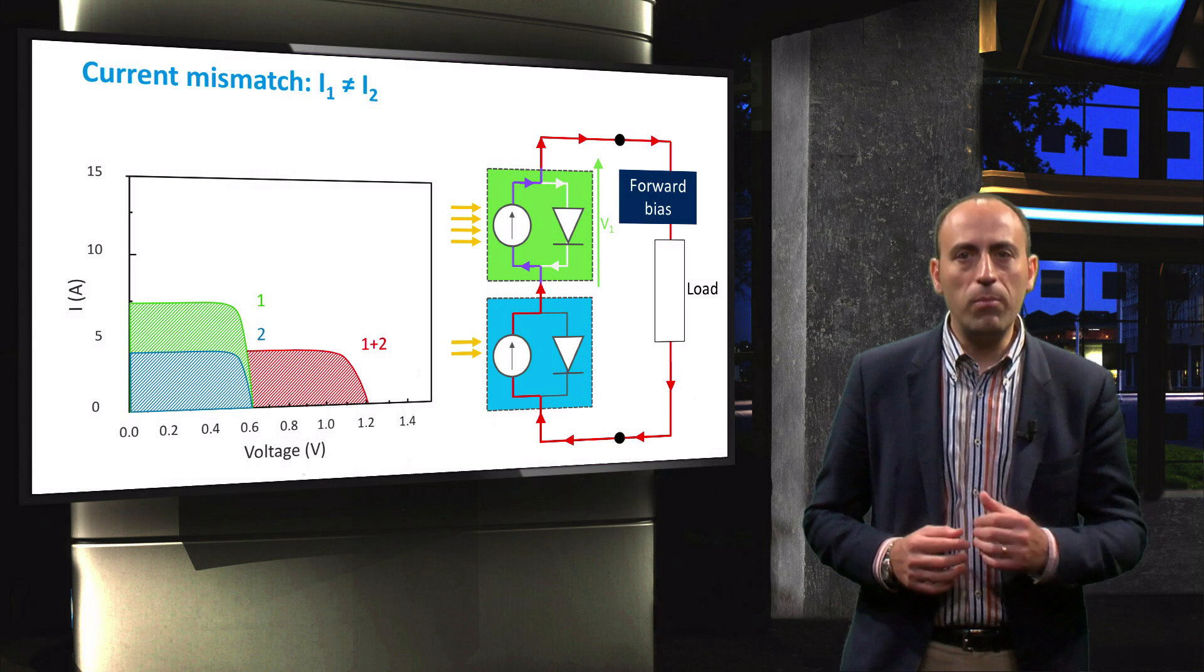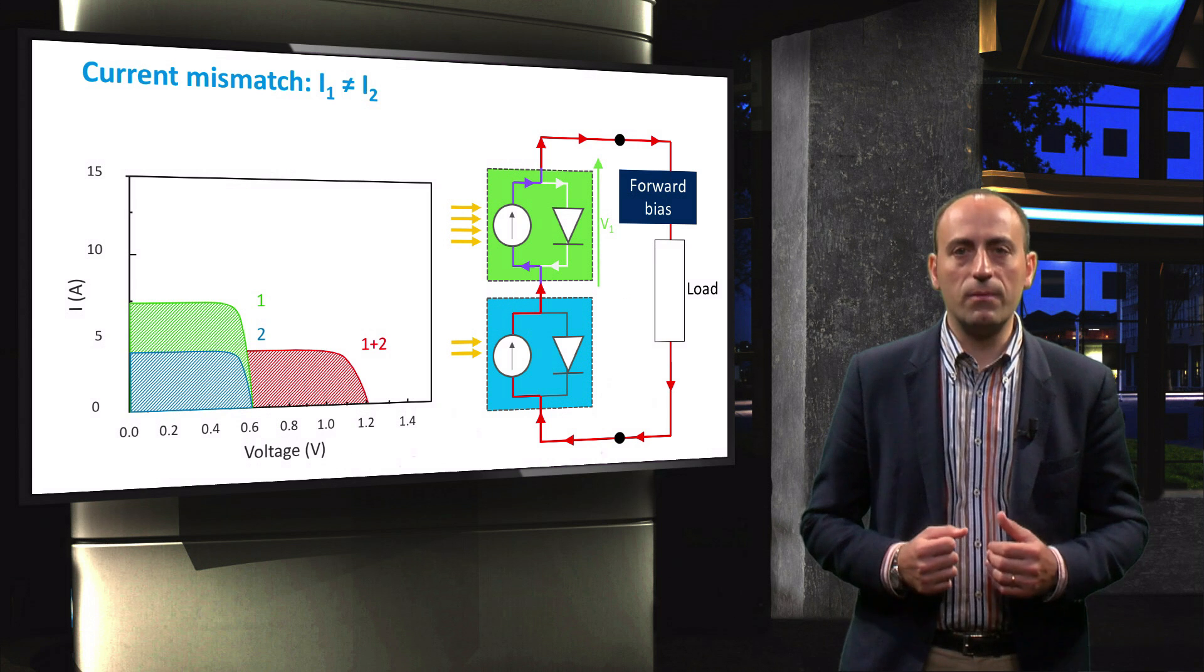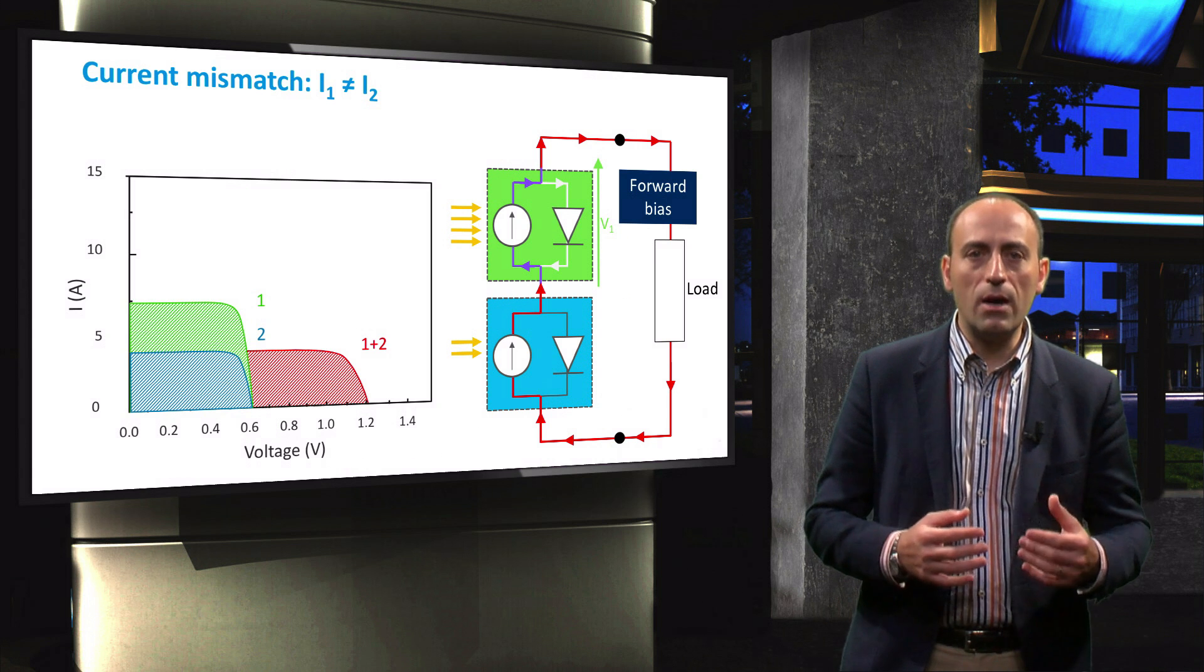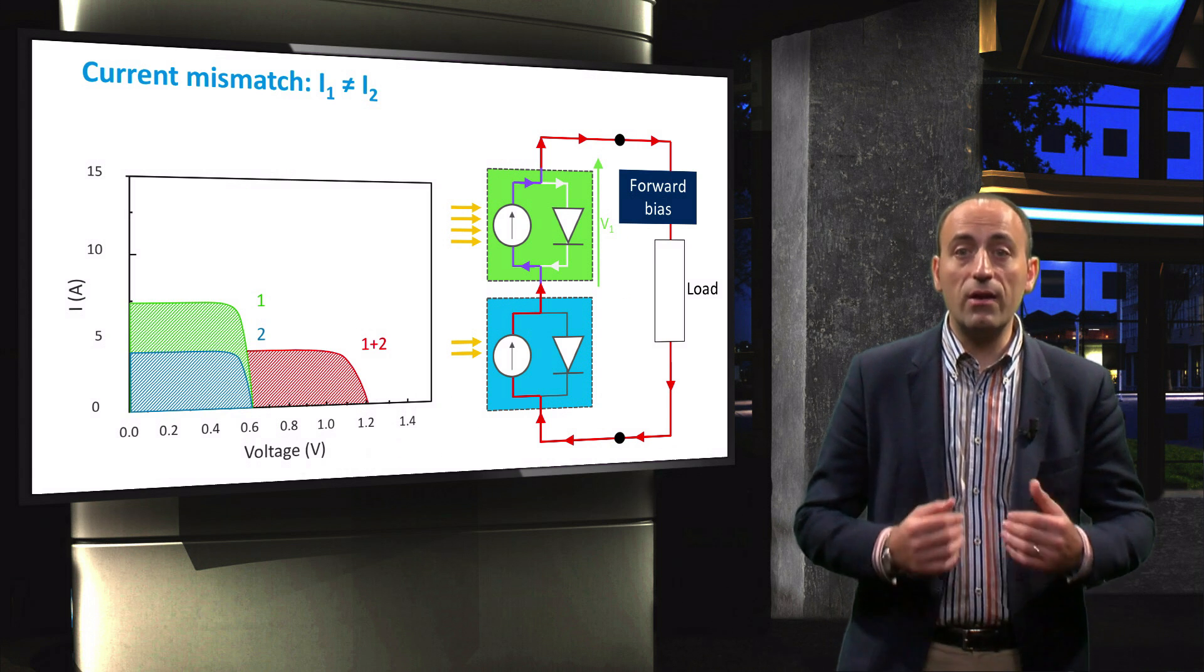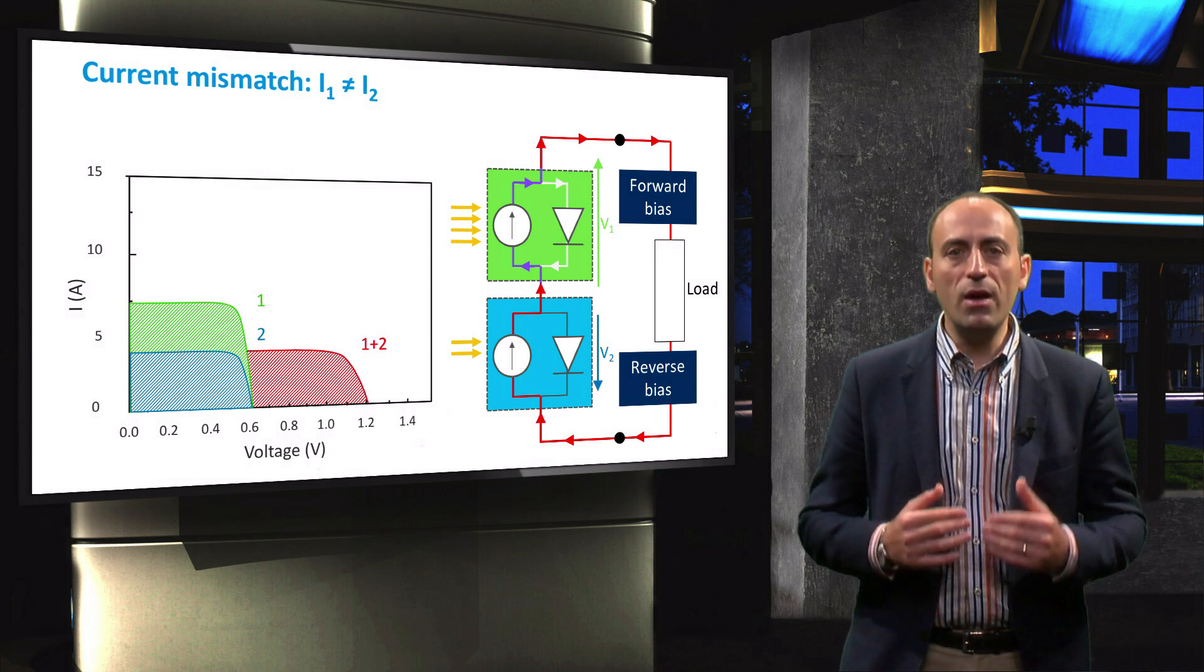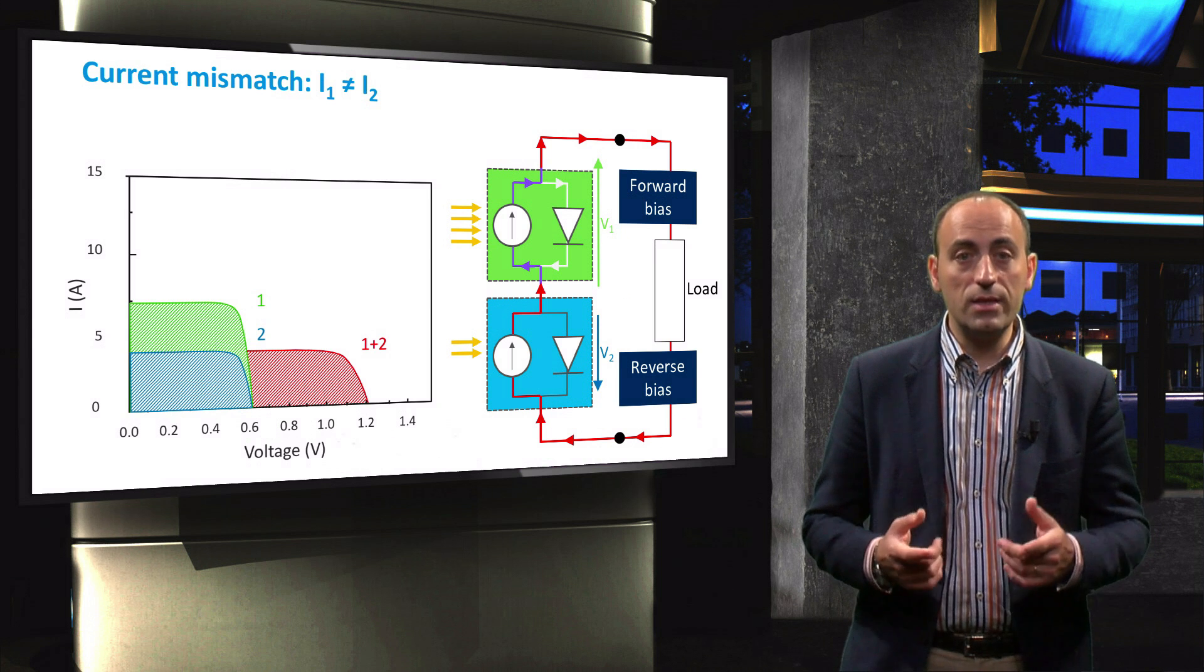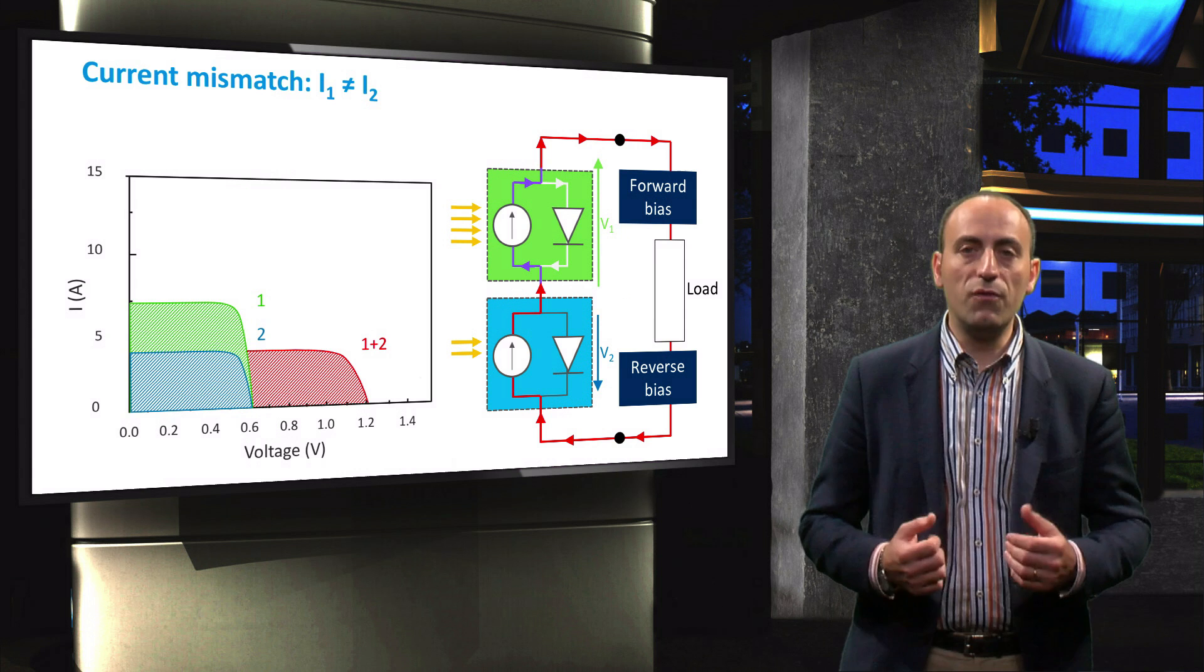Looking at the balance of voltages in this net, cell 1 will be forward biased, and since the low current cell number 2 is directly connected to the good cell 1, cell 2 becomes counter-polarized and therefore experiences inverse voltage. This means that the cell starts to dissipate power in the form of heat.